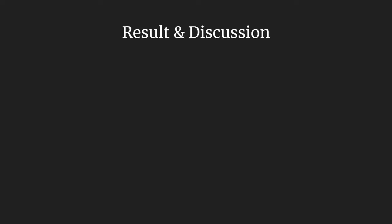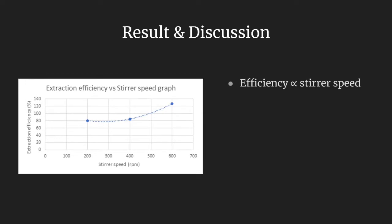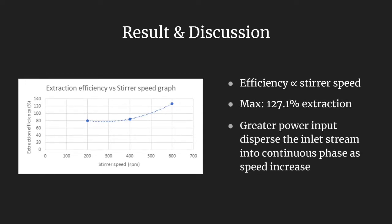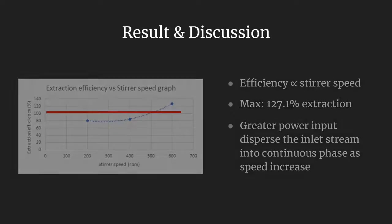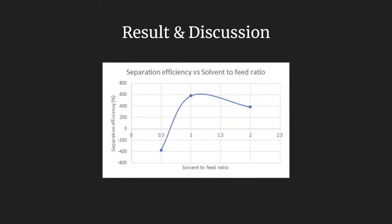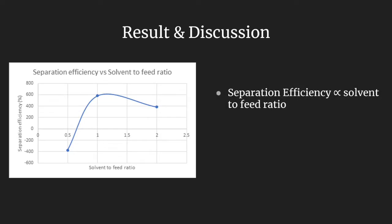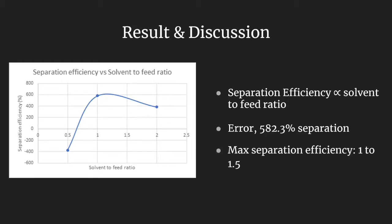Another graph plotted is extraction efficiency versus stirrer speed. The trend is proportional — the greater the speed, the greater the power input to disperse the inlet stream into the continuous phase. However, the same error occurs in this graph as well, with efficiency values exceeding 100% being not applicable. For the graph of separation efficiency versus solvent to feed ratio, we focus on the trend only. The peak of the curve is somewhere around 1 to 1.5 ratio, indicating that not necessarily the larger the ratio gives greater efficiency. The optimal range is 1 to 1.5 solvent to feed ratio.